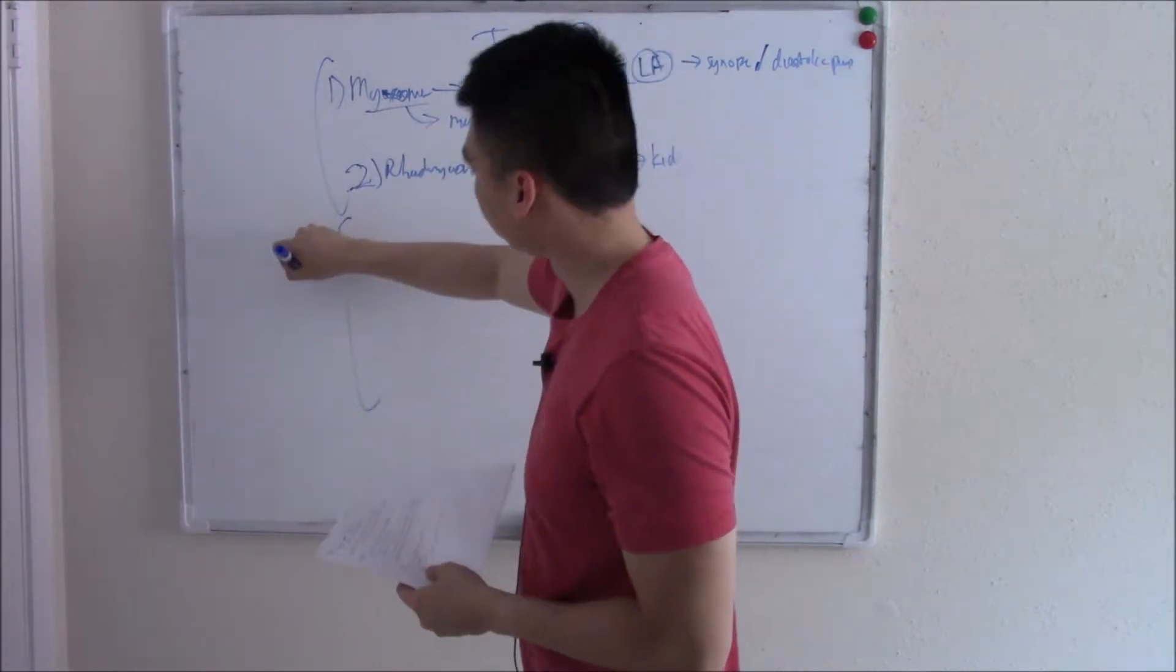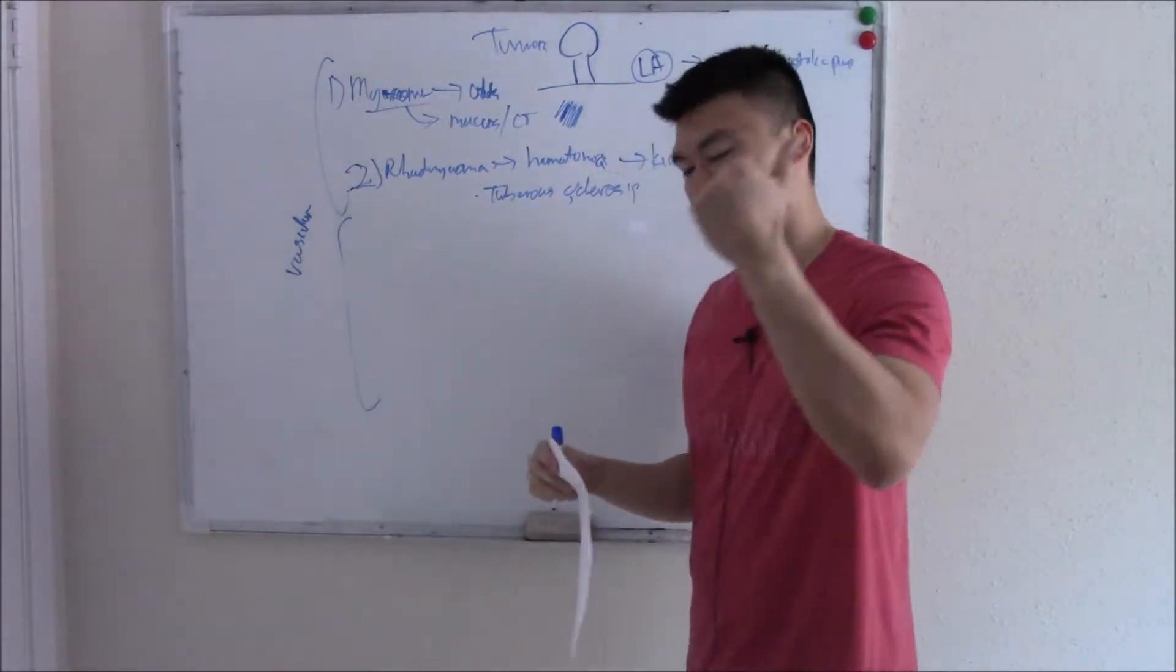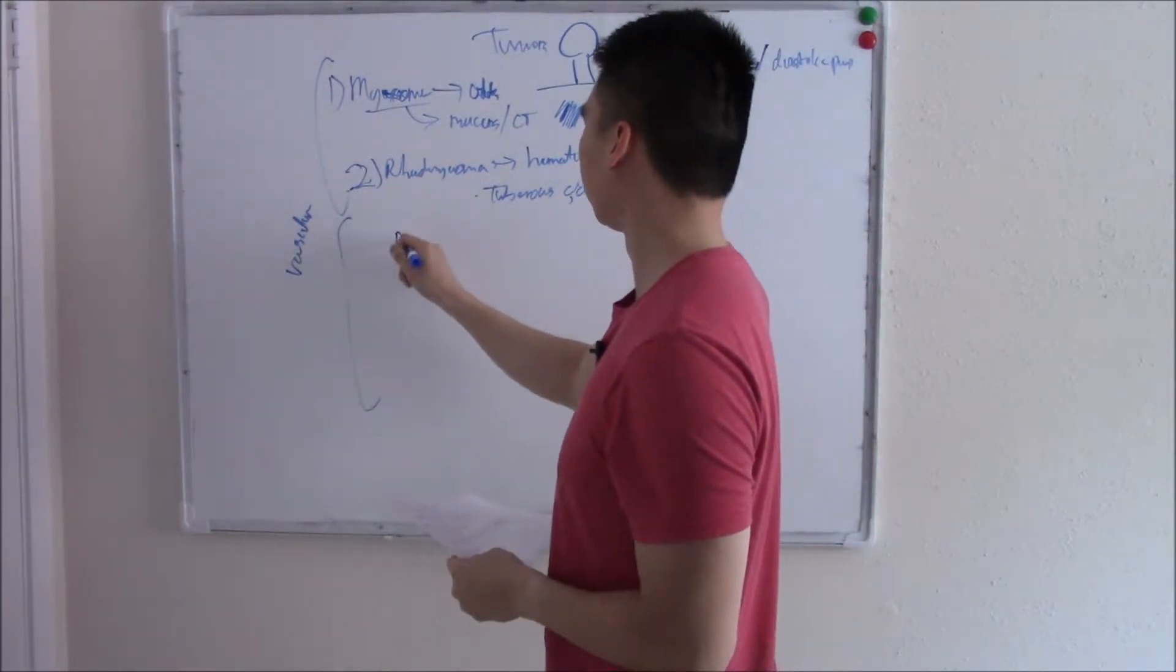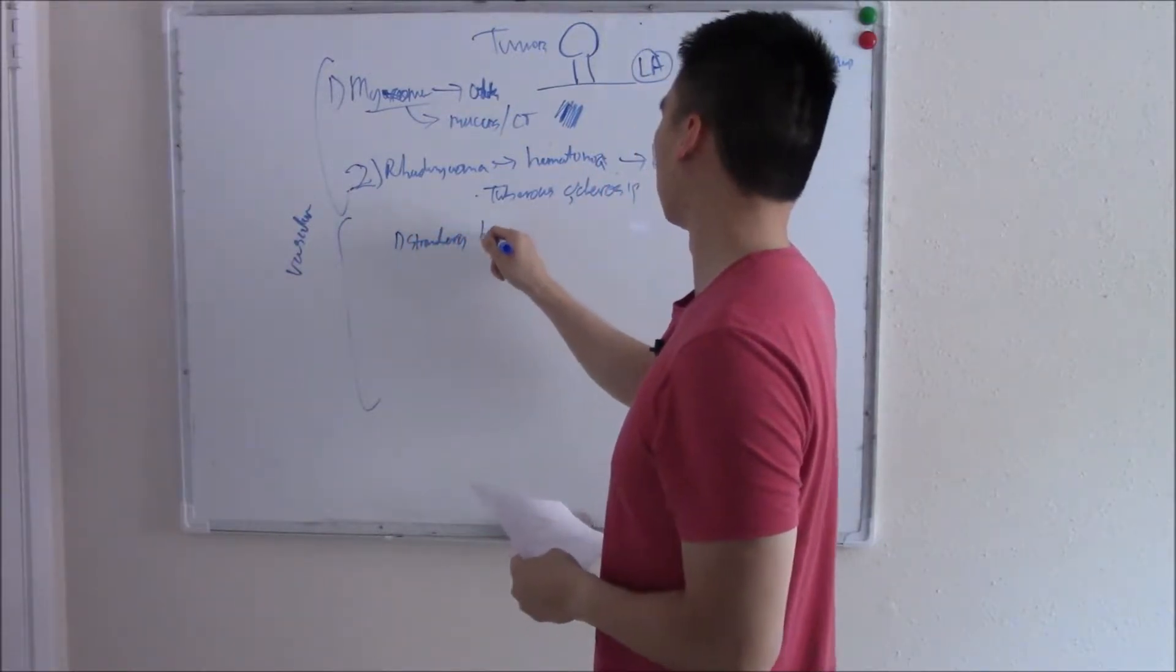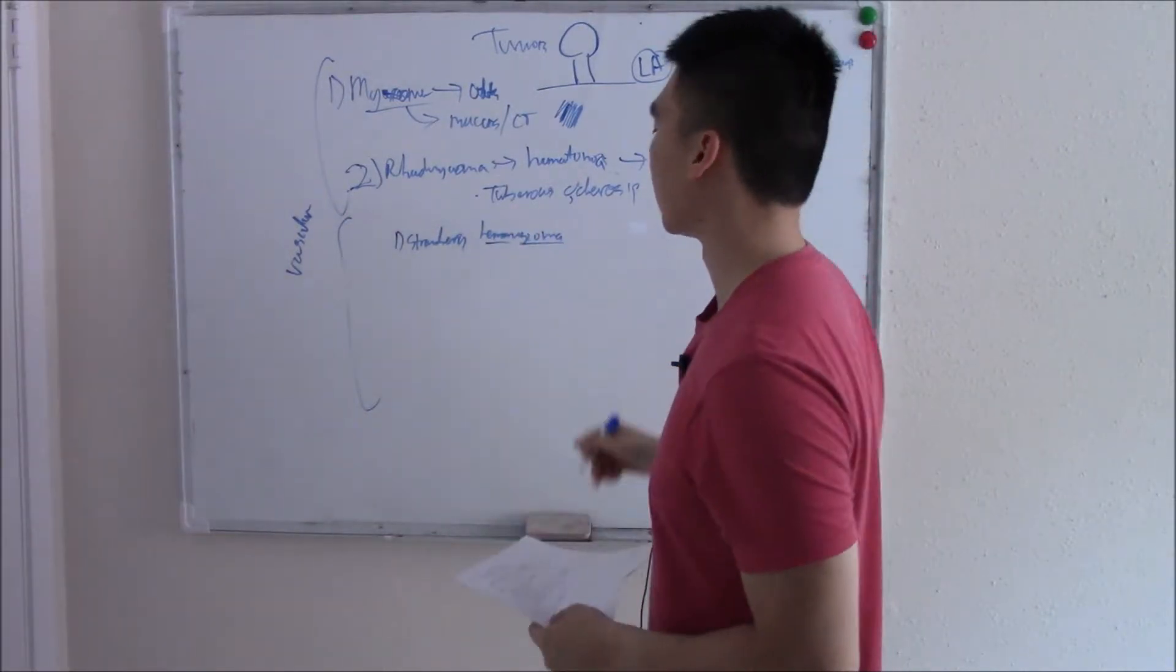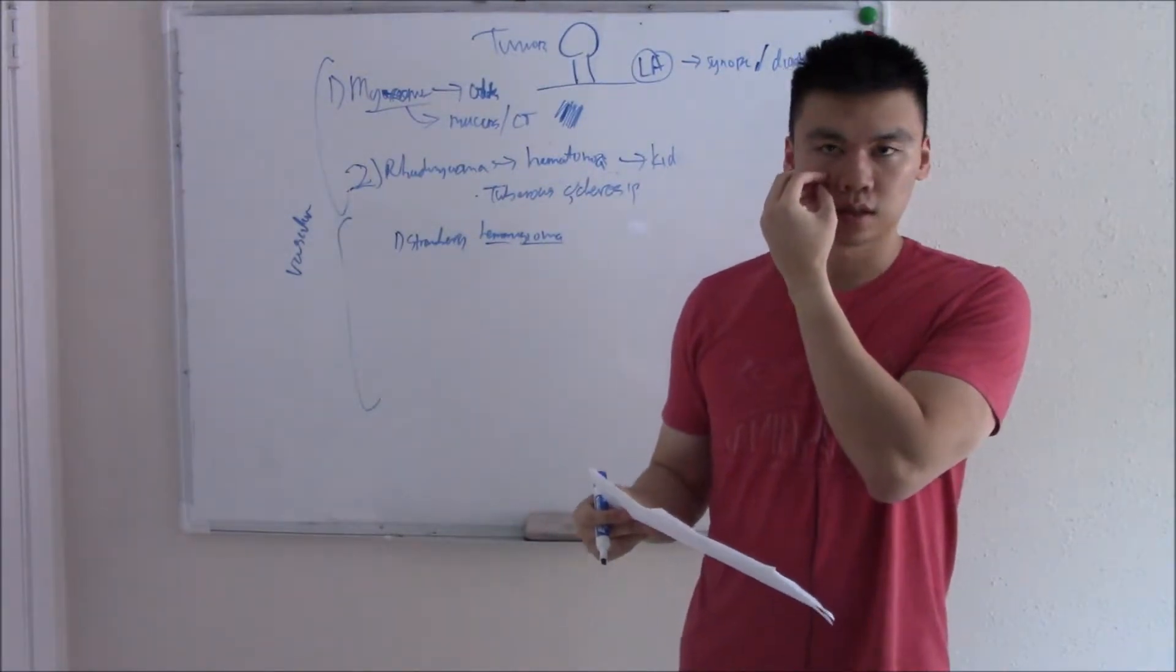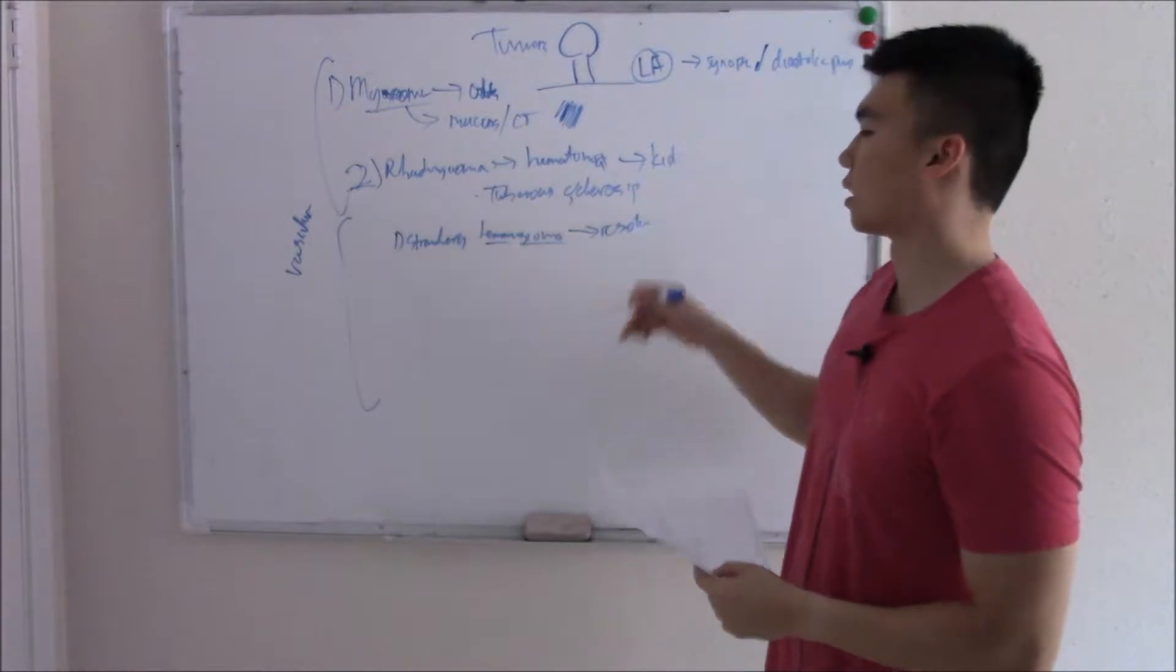Let's talk about some vascular tumors. We have two parts of our cardiovascular system. We have the heart. We have our vessels. So let's talk about vascular tumors. You can have a strawberry hemangioma. Basically, overgrowth of blood vessels. Seen in little kids, you see this little red bump. What do you do about it? You do nothing because they often resolve.